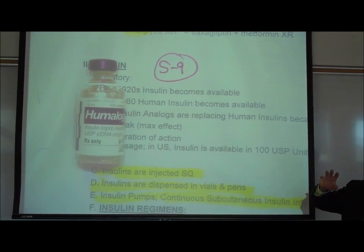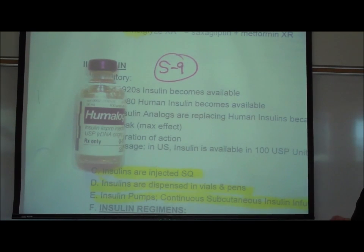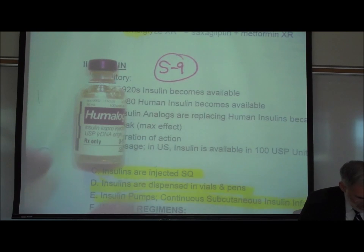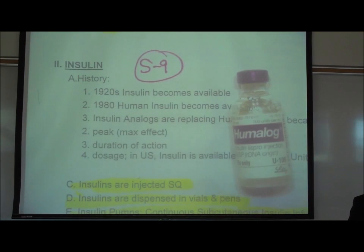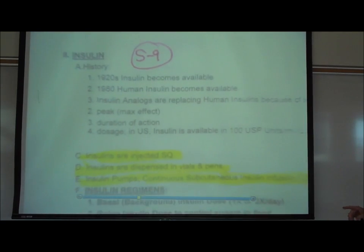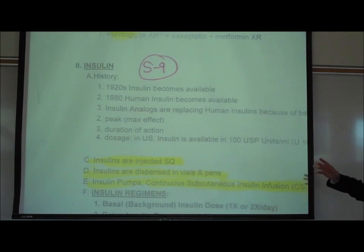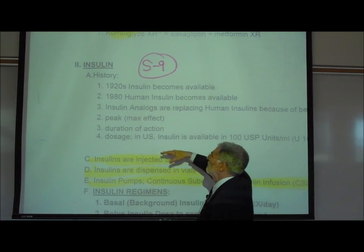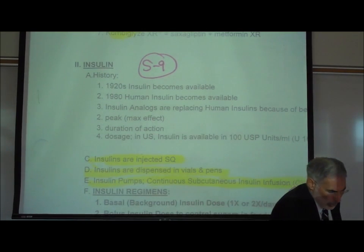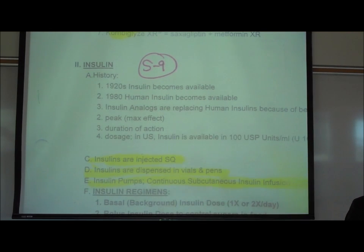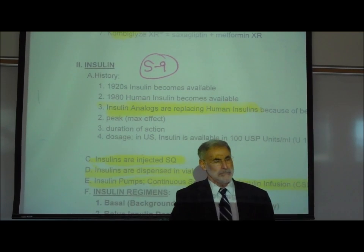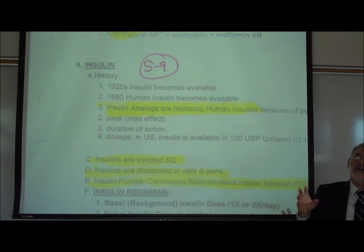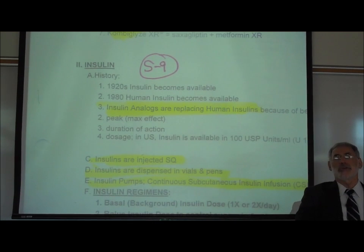The last topic in the treatment of diabetes is the use of insulin. They started making human insulin beginning in the 1980s. Now what's become popular is actually not using human insulin but using insulin analogs — these are synthetic insulins that are similar to human insulin but slightly different, and they vary in the rate at which they're absorbed.